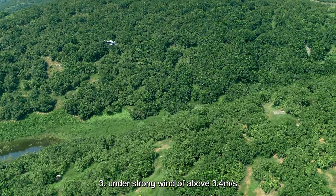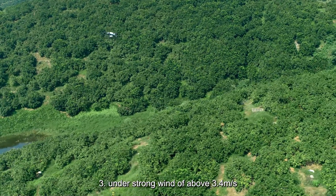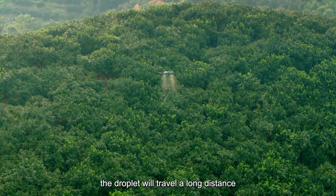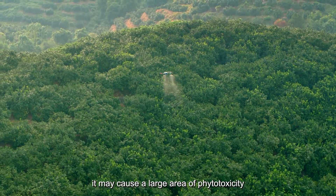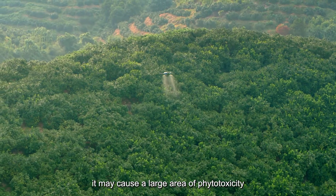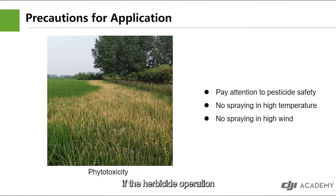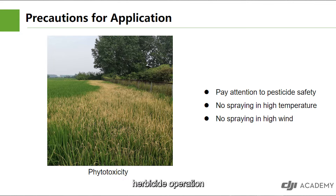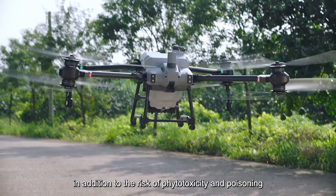Third, under strong wind of above 3.4 meters per second, droplets will travel a long distance and may cause a large area of phytotoxicity if herbicide operation is carried out. Therefore, it is prohibited to carry out herbicide operations at wind speeds above 1.6 to 3.3 meters per second.